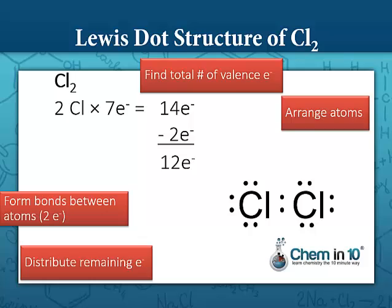And since everyone has a full outer shell, this is our Lewis dot structure. Some people, instead of drawing the two dots for the bond, prefer a line instead. That's equally acceptable. This would be the Lewis dot structure of chlorine gas, Cl2.